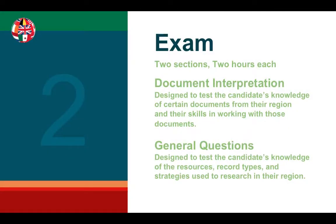The Level 2 exam includes two sections that are two hours each. The two sections are Document Interpretation and General Questions. Document Interpretation is designed to test candidates' knowledge of certain documents from their region and their skills in working with those documents. General Questions is designed to test candidates' knowledge of resources, record types, and strategies used to research in their region.